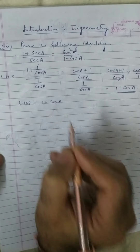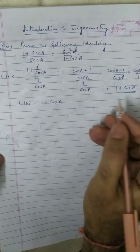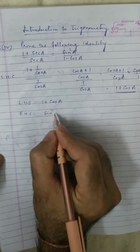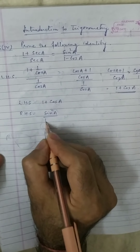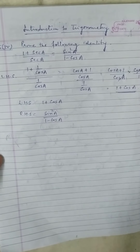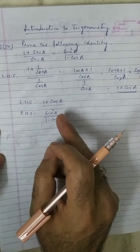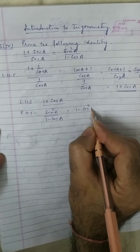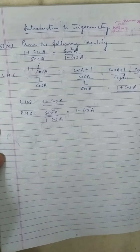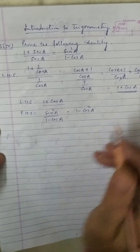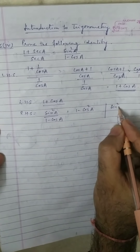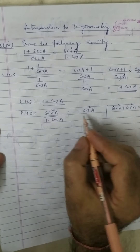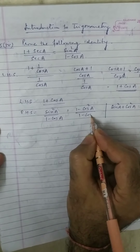Now we take the right hand side: sin square a upon 1 minus cos a. On the left hand side we have 1 plus cos a. So sin square a can be changed to 1 minus cos square a, because sin square a plus cos square a is equal to 1. So sin square a equals 1 minus cos square a, giving us 1 minus cos square a upon 1 minus cos a.